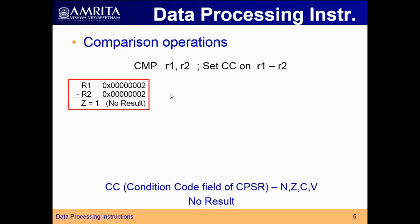Example: R1 equal to 0x00000002, R2 equal to 0x00000002. Performing CMP: R1 minus R2, which is 2 minus 2, gives 0. The result is not stored anywhere, but since the result is 0, the Z (zero) flag will be set. This is the binary equivalent — subtracting 2 minus 2, so the Z flag is set.